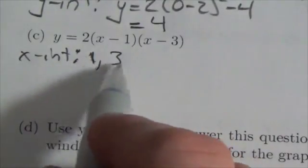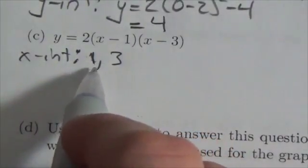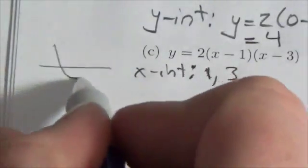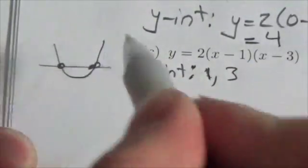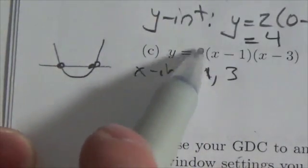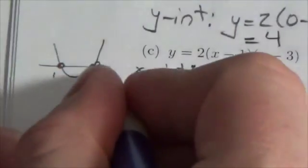I can tell right now, because my x-intercepts here are 1 and 3, really what I've got going on here, if I want to think of it like this, the parabola is opening like this. Here's 1, here's 3. Now, I know it's opening up because I can see that the leading coefficient here is 2, positive 2.